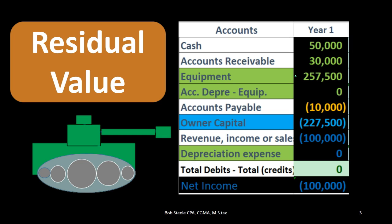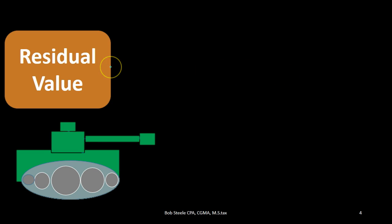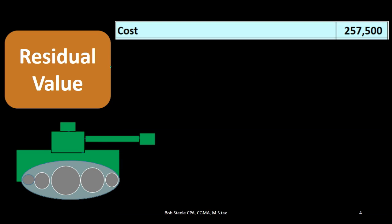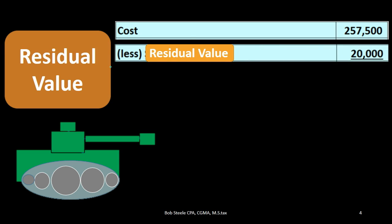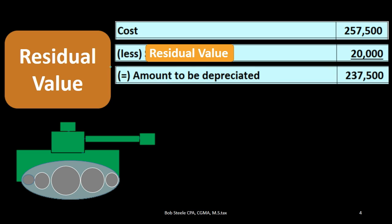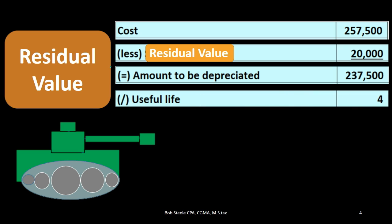Residual value is important for a couple of different areas, one being the calculation of depreciation. Using the straight-line method, we take the cost and subtract the residual value — the value we believe the asset will be worth at the end of its useful life — giving us the amount to be depreciated. We then divide that by the number of years of useful life, in this case four years.